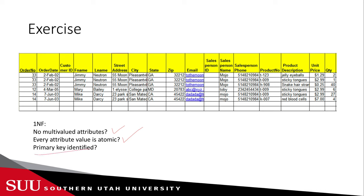Now we need to identify the primary key. Can we use the order number as the primary key? We have repeated order numbers, so obviously not. There are repeated entries across all columns, so we need a composite primary key composed of two or more attributes. Let's look at combining order number with something else. Since we don't have standalone IDs for salesperson or customers, let's consider something else — what about product number?